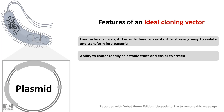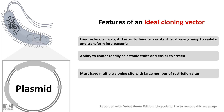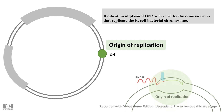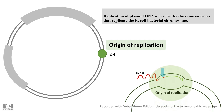Selectable and screenable markers allow recombinants to be distinguished from non-recombinants. Most importantly, the plasmid should have a multiple cloning site with a large variety of restriction sites to cut the plasmid and insert the gene of interest. Another critical element is the origin of replication, where replication of the plasmid starts, regulated by sense and antisense RNAs.